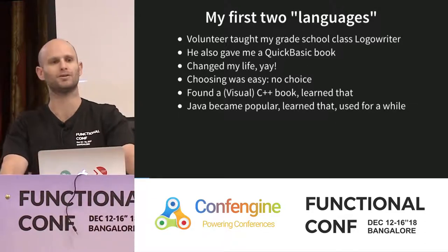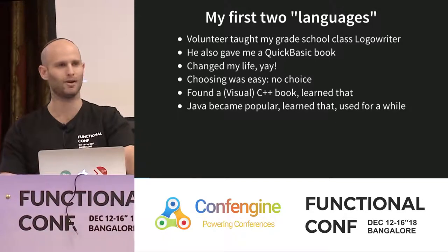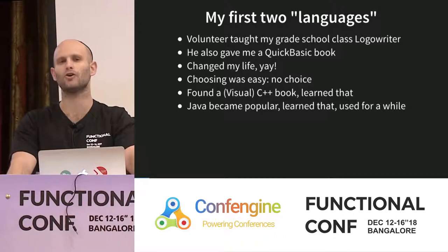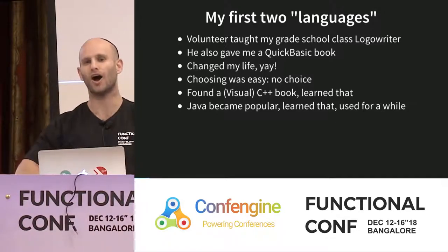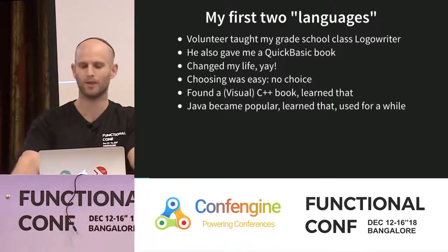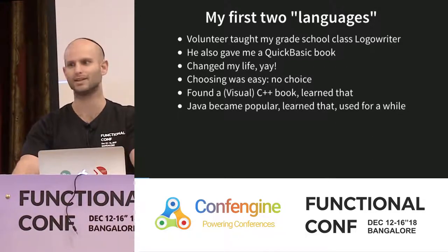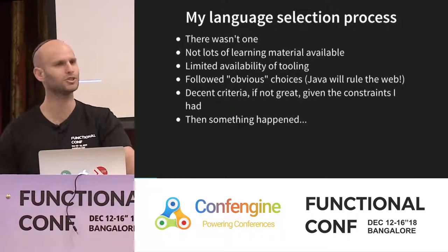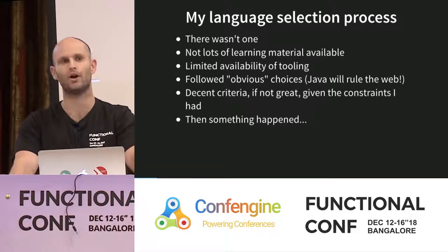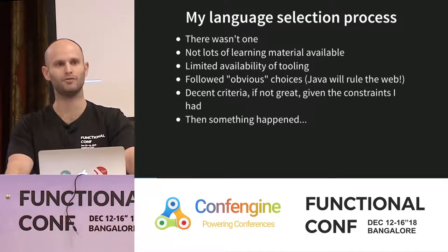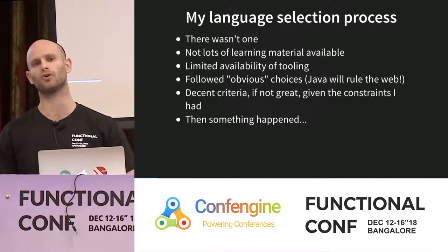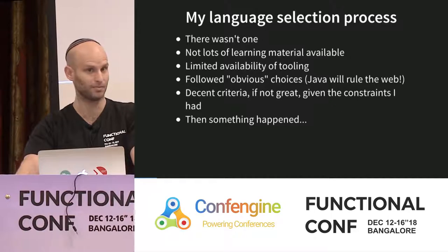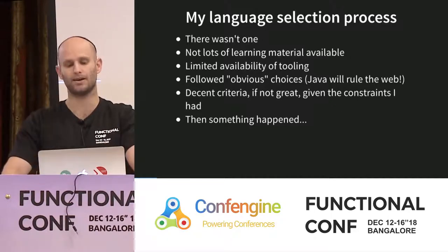Later on, at the local bookstore, I found a book on Visual C++ on sale — probably some old edition. I didn't even have a Visual C++ compiler, but I somehow made it work and learned C++ for a year. Then Java became really popular — Java was going to take over the world, everything on the front end was going to be done in Java, and the web browser was going to be dominated by Java applets. I learned it because that's what the world told me I needed to learn. The language selection process for all four was pretty obvious — there wasn't much of one at all.